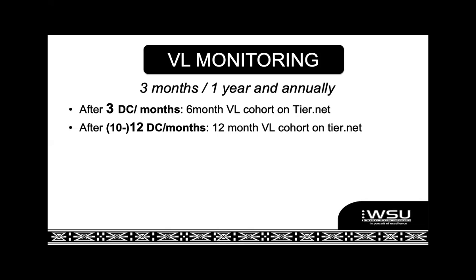The official schedule is three months and one year, but if you see the patient at ten months you can do the viral load at ten months. If it's LDL, give them six months of CCMDD. The DOH is very much trying to create systems where patients come to the clinic as little as possible — so don't see them at ten months and then bring them back two months later for a viral load. Try to coordinate your bloods as much as possible to reduce clinic visits.